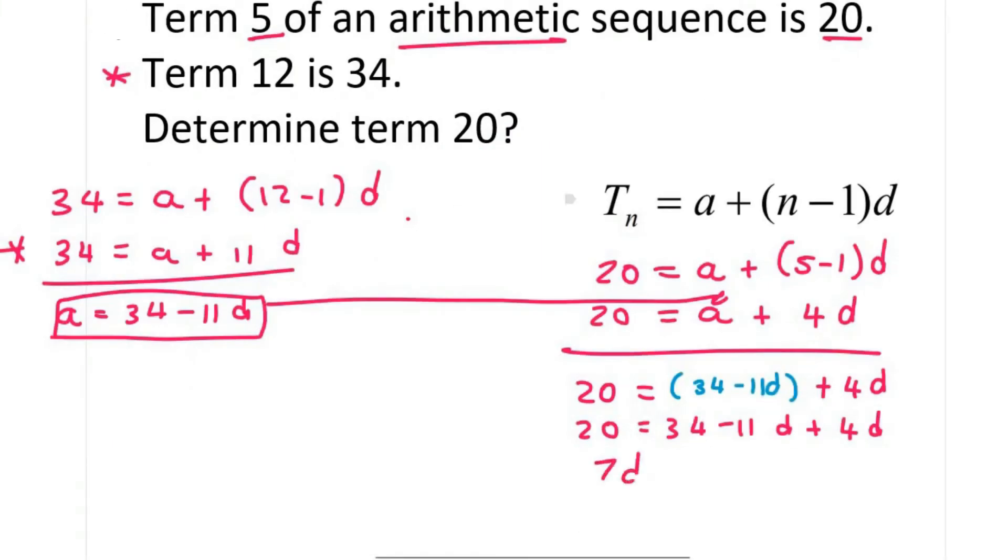You would eventually find that 7d is equal to 14, which means that d is 2. I can then plug that back over here as a 2, and then if you solve that, you'd find that a is 12.